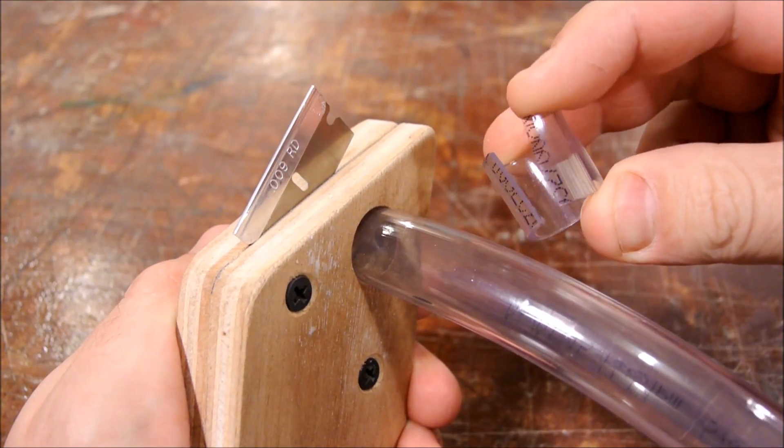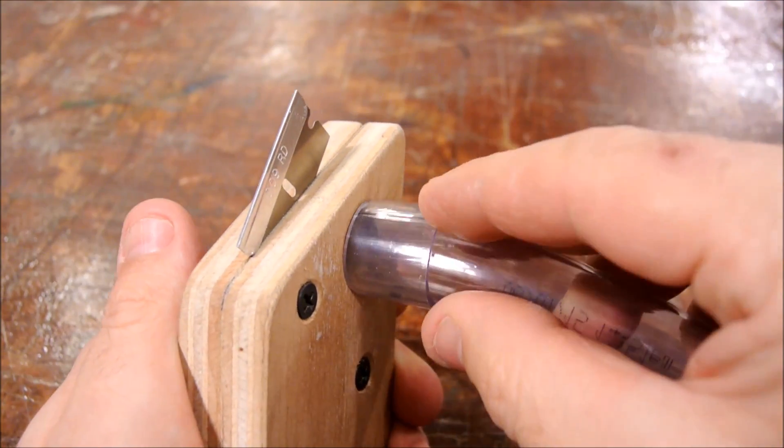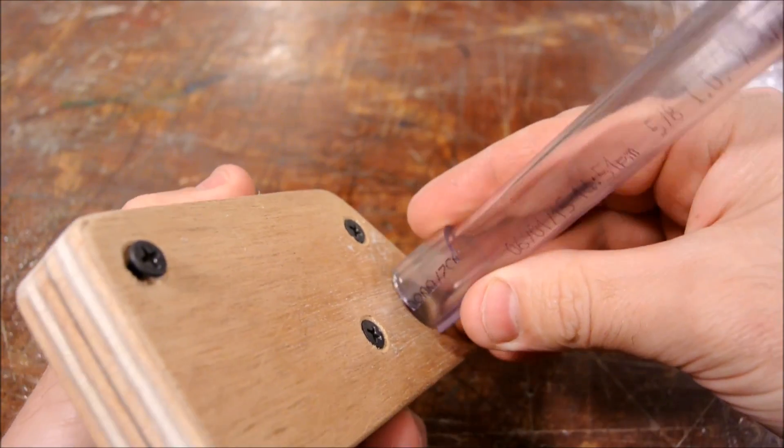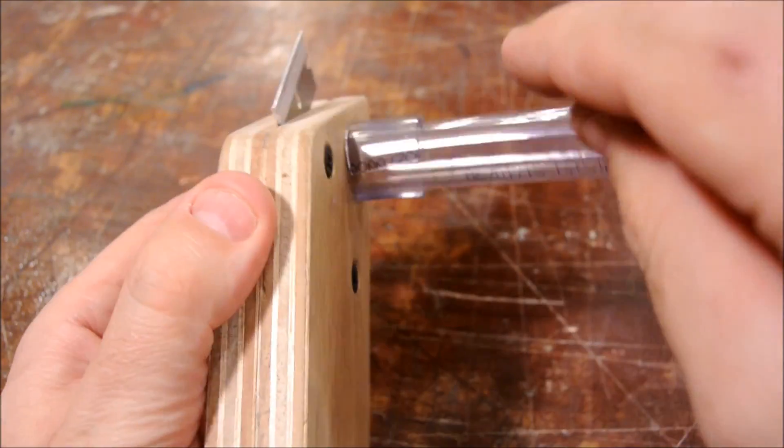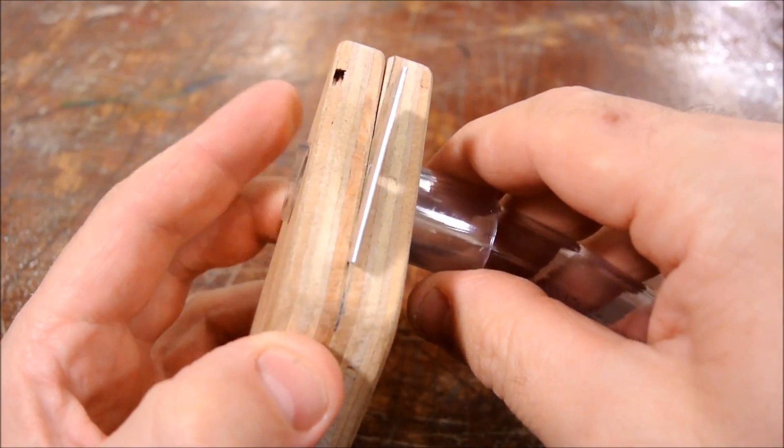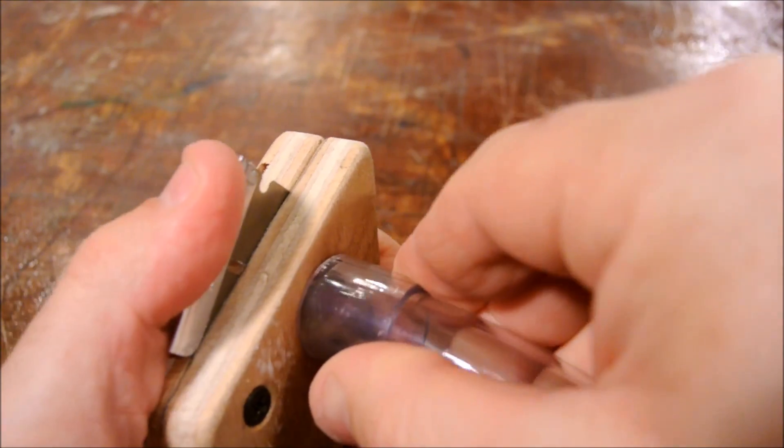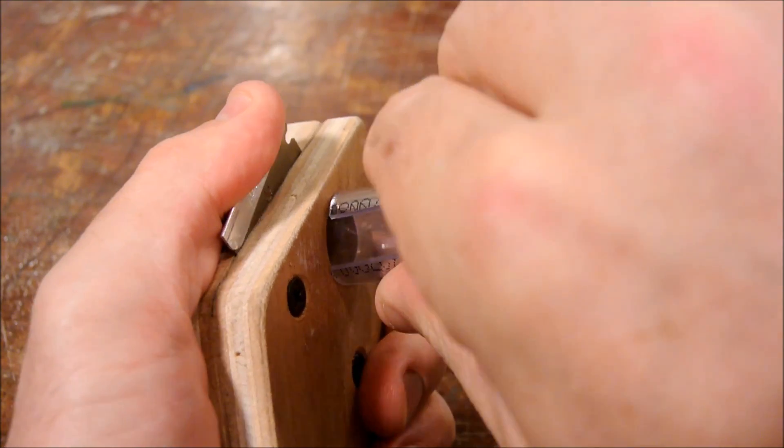Now this additional piece of vinyl that's been split down the middle functions as kind of a guide. You allow the guide to roll along the plywood here and it really helps to make a straighter cut and compensate for the curvature of the vinyl tubing that happens during shipping.